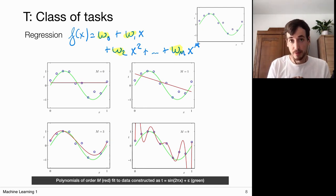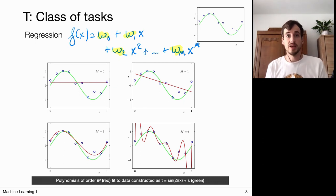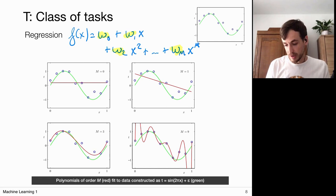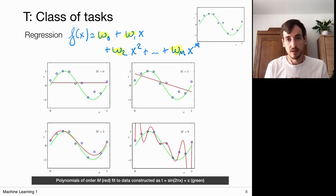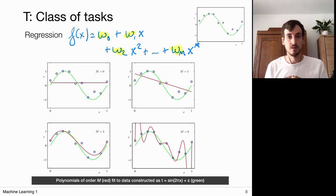If I pick a zero-order polynomial I'm really dealing with a straight line — I can only tune the offset parameter and this horizontal line is the best I can do. If I go to a higher order (m=1), I'm just adding a slope, looking at two coefficients w₀ and w₁, and I find this is the best I can do.